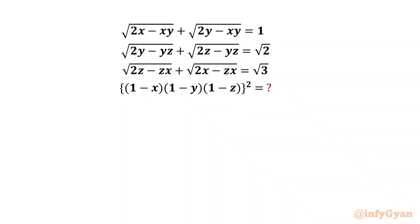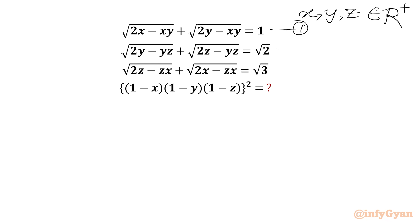We have to evaluate (1 minus x)(1 minus y)(1 minus z) whole square, given that x, y, z belong to positive real numbers. Let's get started by writing equation 1, equation 2, equation 3. The required expression is E.